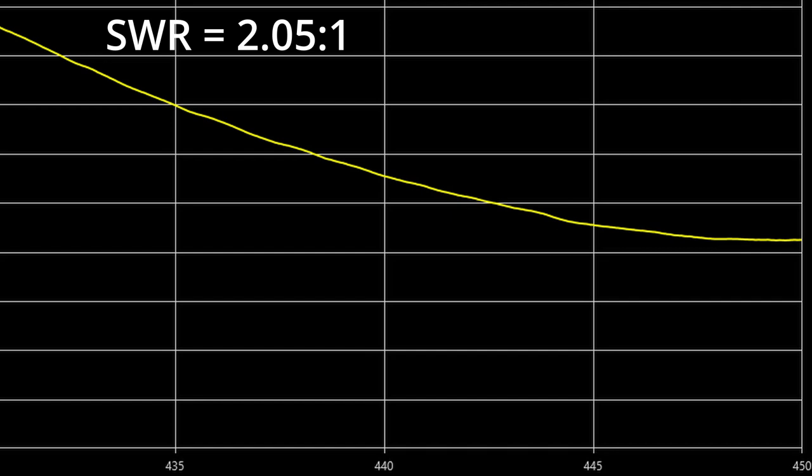The SWR doesn't drop below 2 to 1 until we hit around 434 megahertz. It drops down to 1.7 to 1 at around 441 megahertz. But this response fits the US repeater frequencies very nicely with inputs and outputs residing between 442 and 450 megahertz. This puts the sweet spot of this antenna right on top of the repeater rich portion of the band.